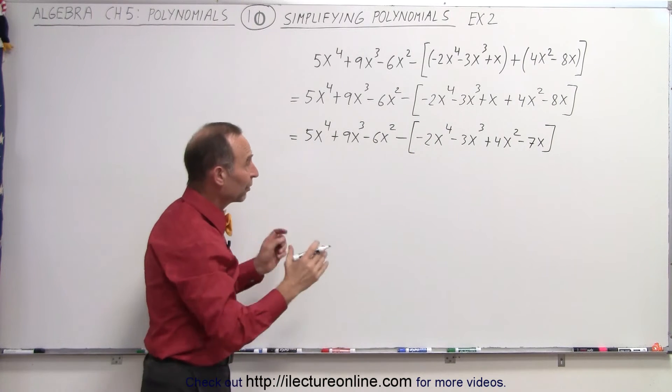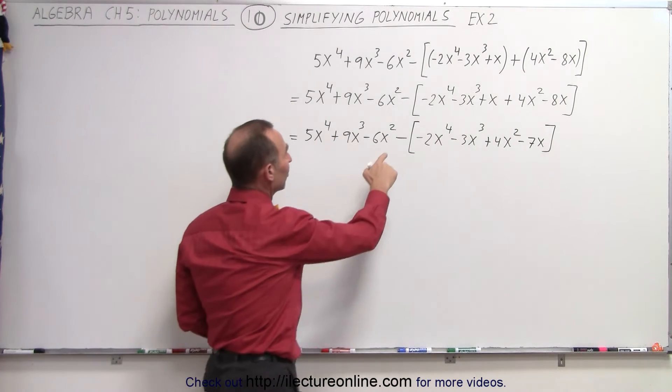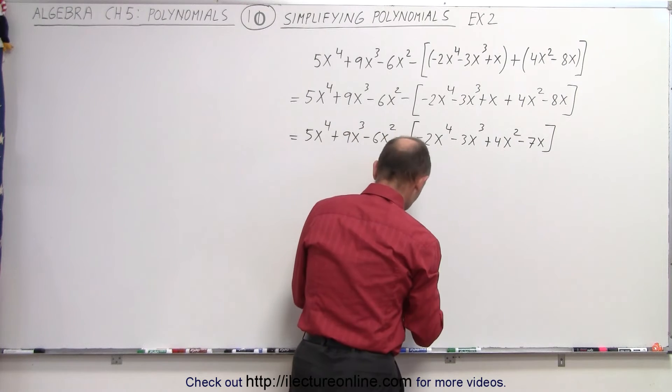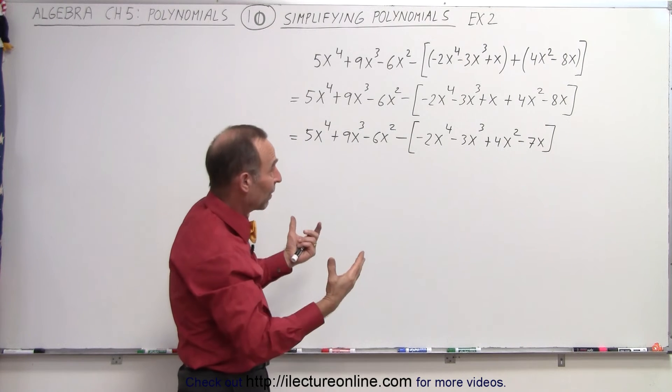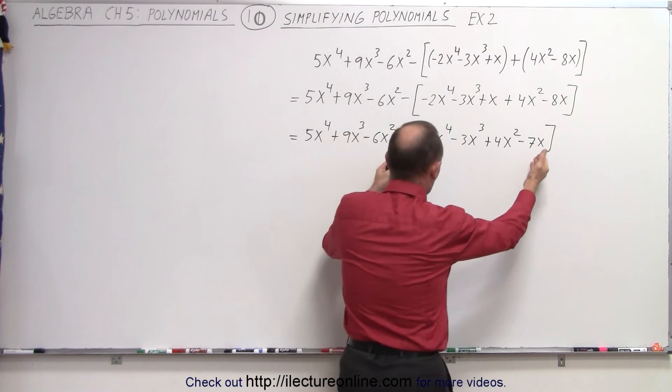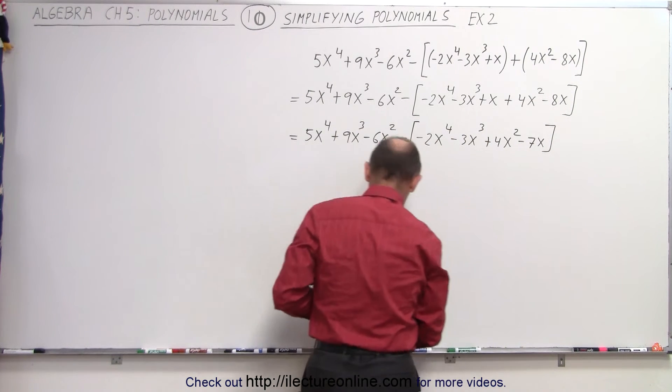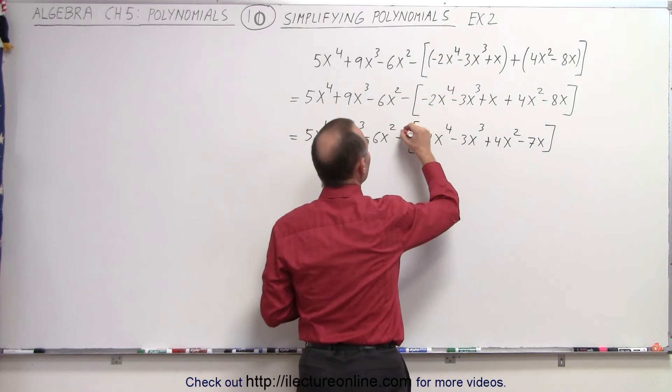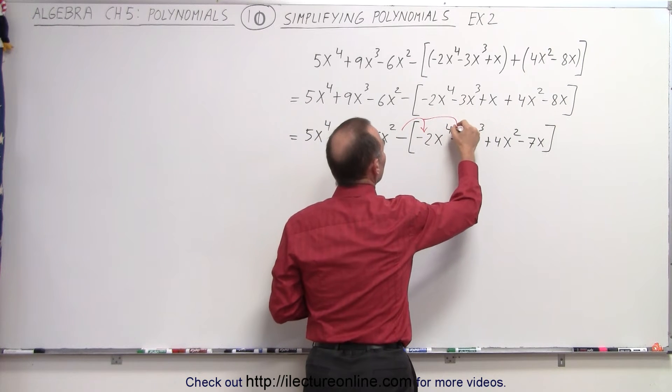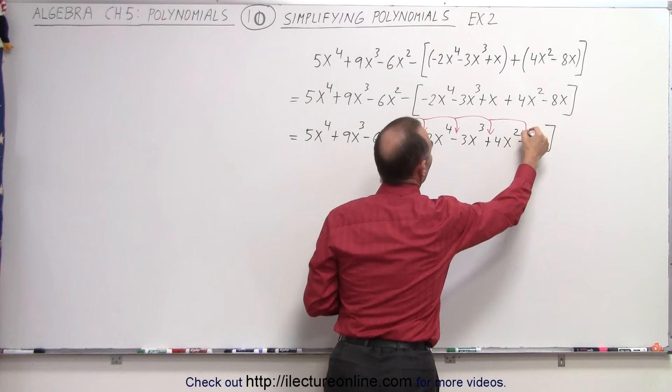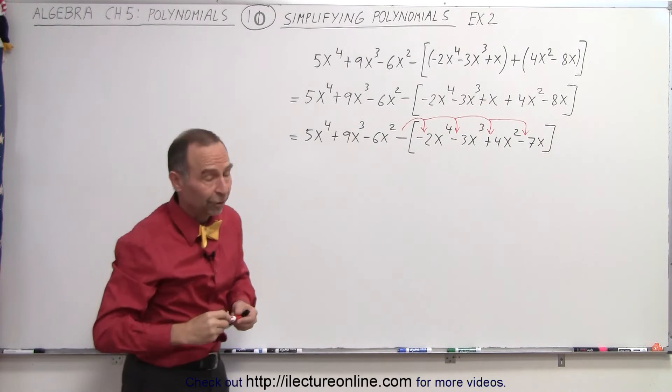So now that we have simplified what's inside the brackets, we can now apply this negative sign to what's inside the brackets before we remove the brackets. So here we have an example where you can simply not just remove the brackets. You have to first apply the negative sign to what's inside the brackets. We have to apply the negative sign here, here, here, and here. And we have to do that first.